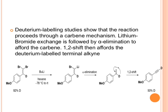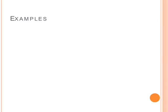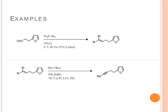Now let us discuss the examples. In the first example, you can see there is an aldehyde functional group. It is first treated with triphenylphosphine and carbon tetrabromide, which generates dibromo olefin, which on treatment with n-butyl lithium and methyl iodide generates a terminal alkyne.